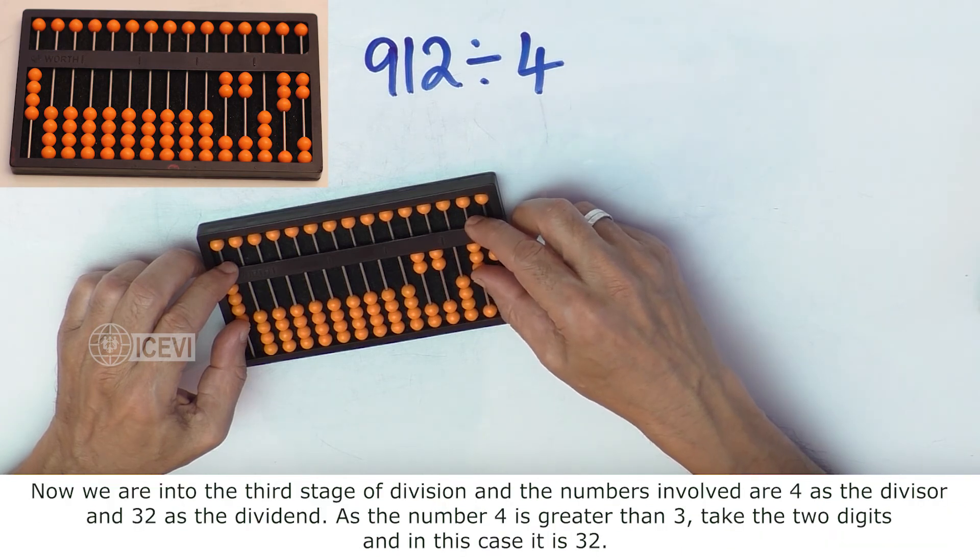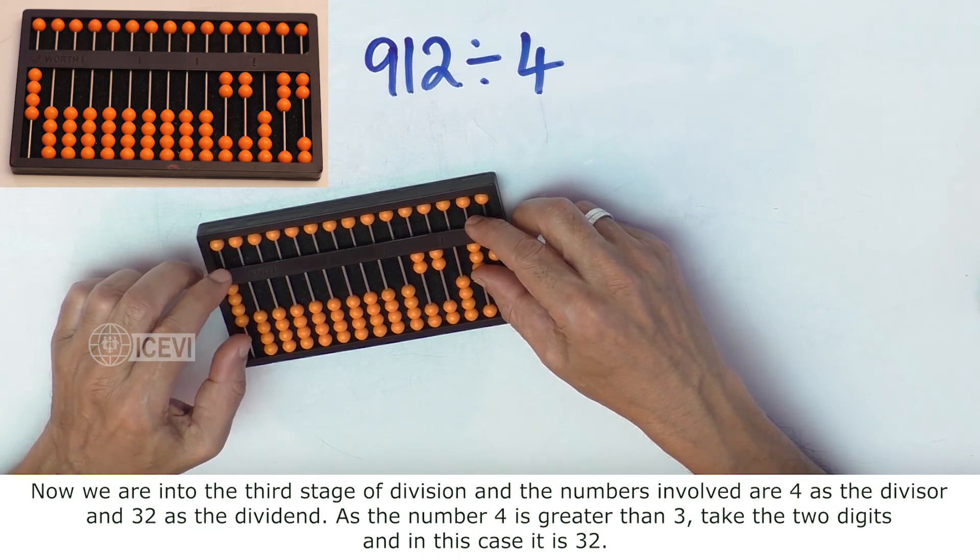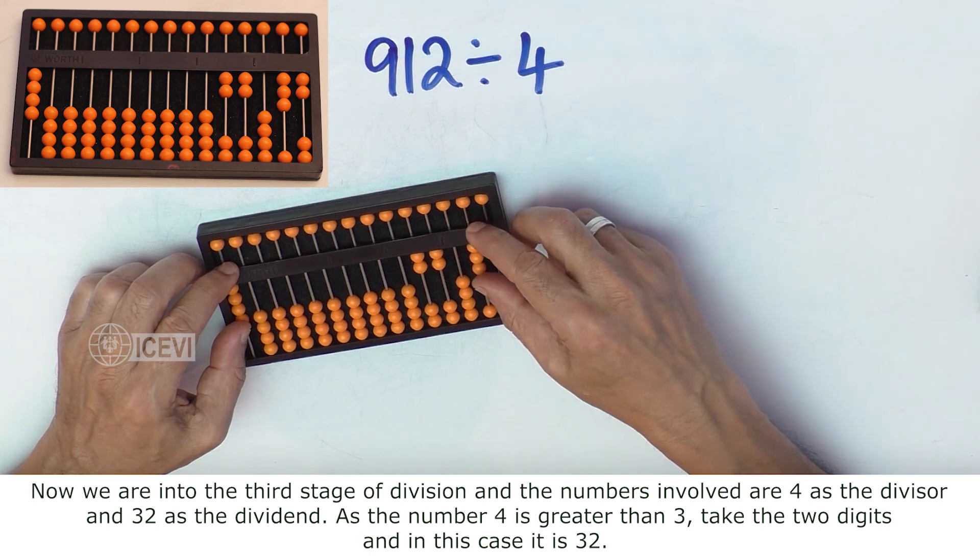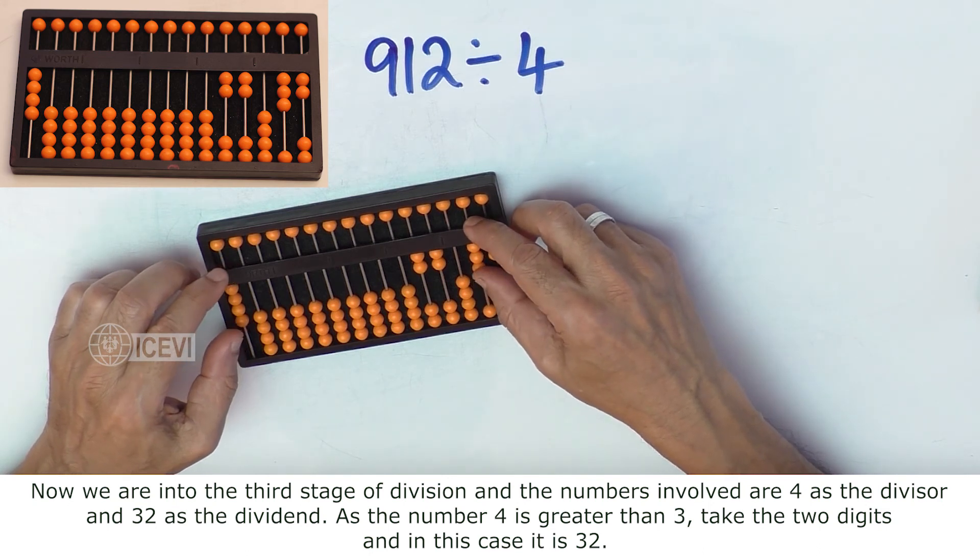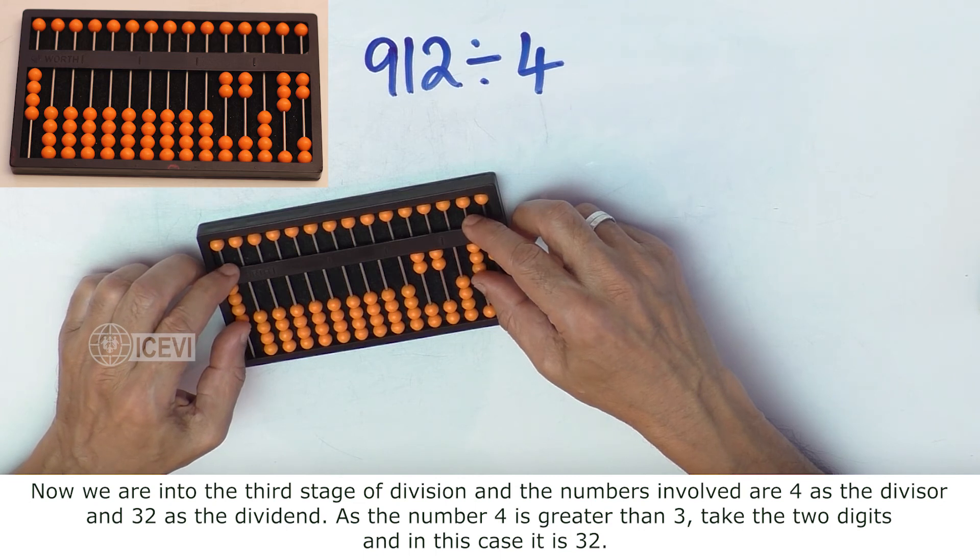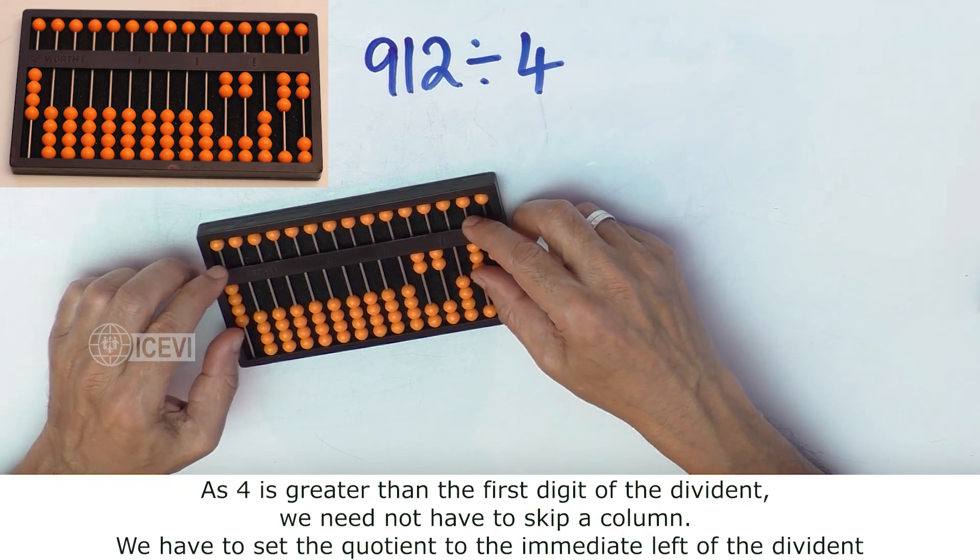Now we are into the third stage of division, and the numbers involved are 4 as the divisor and 32 as the dividend. As number 4 is greater than 3, take the 2 digits, and in this case, 32.